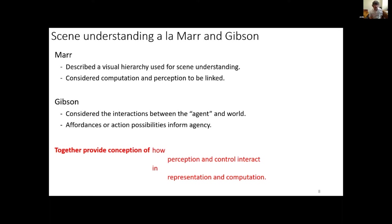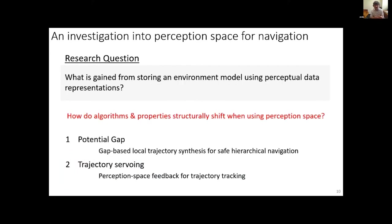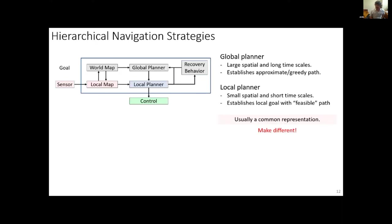This all boils down to representation, computation, and the interaction of perception and control. We study this purely within the context of navigation with no absolute positioning information from GPS. Navigation is about using images to create anchors that allow decisions about the world and how to move within it. This talk covers two parts: a potential gap method for local trajectory synthesis within a hierarchical navigation system, and trajectory servoing using perception as a feedback modality.